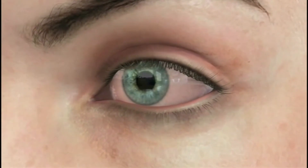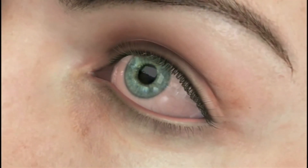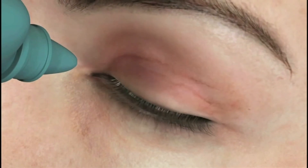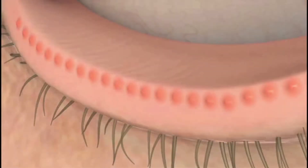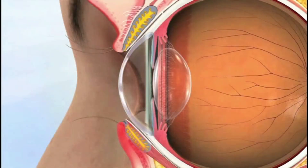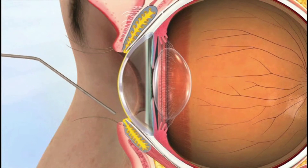In meibomian gland recanalization, numbing drops are used and a special gel is then applied to the lids to numb the entire area, after which a specially designed blunt probe is used to recanalize these meibomian glands as you can see here. Think of that as reopening toothpaste tubes that then releases the oil to coat your tear film.